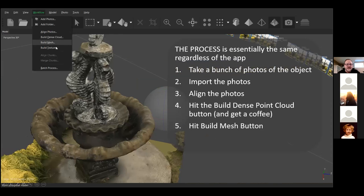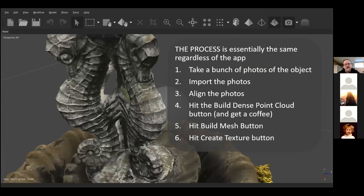Next I hit 'build mesh,' wait a little bit, and the model is created. It's already looking a lot like the statue, though you can see some gaps — for example at the base, where I couldn't get my camera down far enough. Because I have no camera shots of what's there, it's just empty space. Then the last step is 'build texture' — I hit that button, walk away, and you can see some imperfections between the seahorses where I couldn't get the camera inside. It's not perfect, but the model looks a lot like the statue. And essentially that's the process.